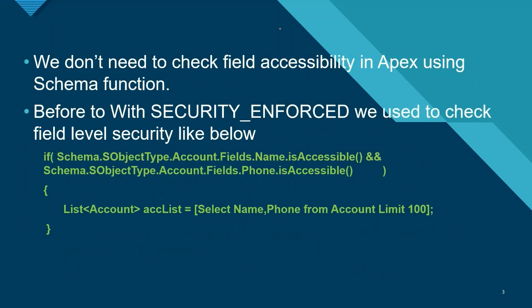Previously, we were checking the accessibility of the field using the Schema function. Before WITH SECURITY_ENFORCED, we used to check field-level security like this: there is an if-condition where we define the Account object type, list all the fields, and check whether the name field is accessible for the particular user running the code. If the name field and the phone field are accessible, only then will this particular query run.